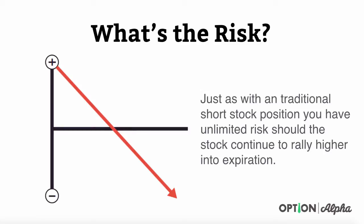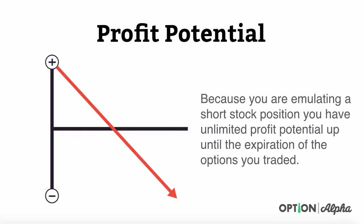What's the risk? Just as with the traditional short stock position, you do have unlimited risk should the stock continue to rally higher into expiration. We're not trying to change anything here — we're just trying to use our capital a little bit more efficiently but create the same profit and loss diagram. As far as profit potential goes, because you are emulating a short stock position, you have unlimited profit potential up until expiration of the options, assuming the stock goes down — really limited to the stock going to zero, of course.